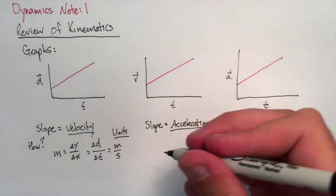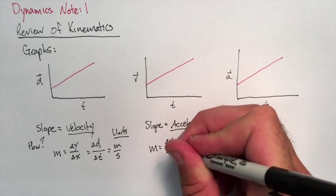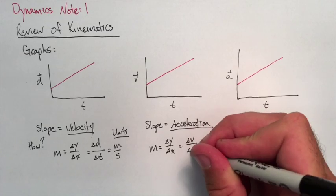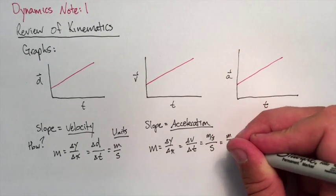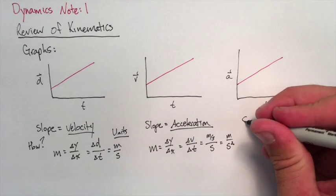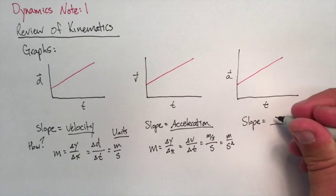Doing the same thing for a VT graph, the slope should be acceleration. So a change in y is a change in velocity. A change in x is a change in time. So it's meters per second over second. Meters per second squared is our final unit, which is acceleration.